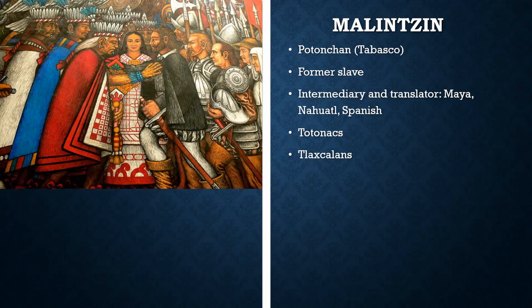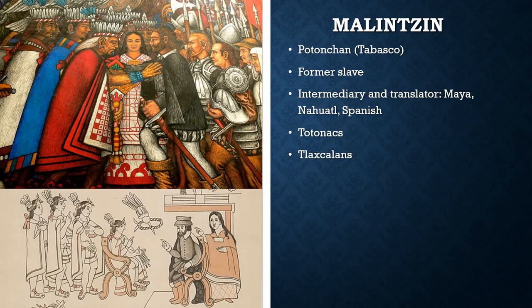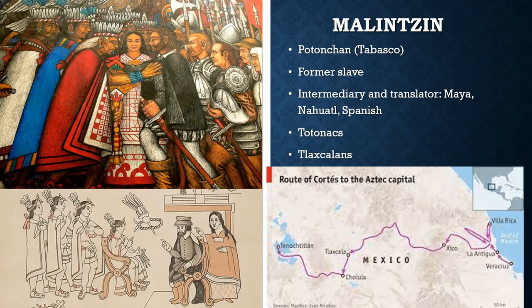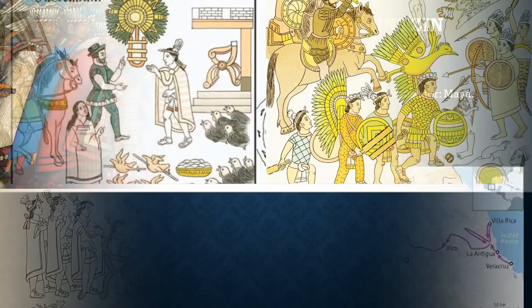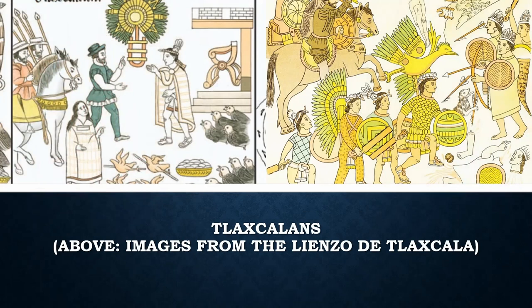They met many key allies who were opposed to the Mexica empire, such as the Totonacs, who were tributaries that dreaded the Mexica's excessive demand for tribute and sacrificial victims. Through Malinzin, the conquistadors also forged an alliance with the Tlaxcalans, who were renowned enemies of the Mexica. The Tlaxcalans became among the Spaniards' most formidable indigenous allies. Without the Tlaxcalans and other native allies who contributed thousands of soldiers, the Spanish — with fewer than 500 men — would likely have never succeeded in conquering the Mexica.